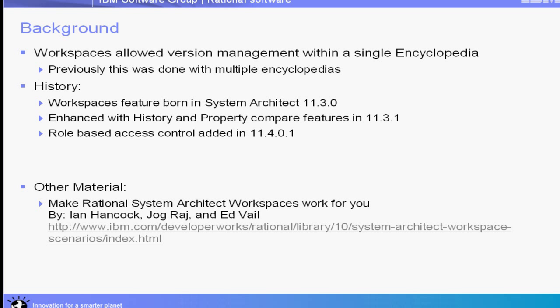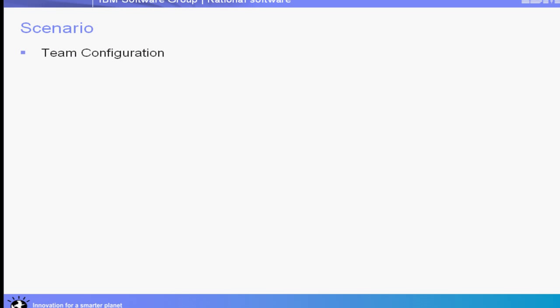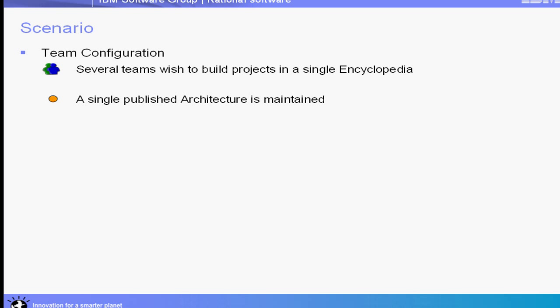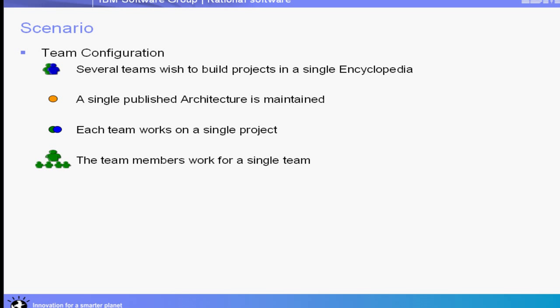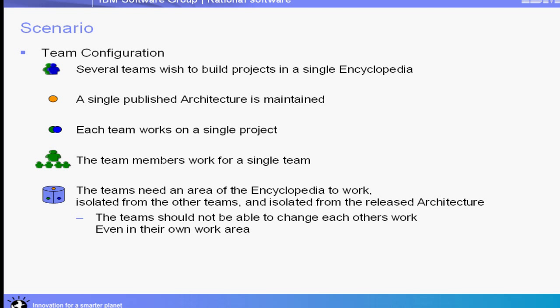For more information about workspaces, take a look at the documentation found in the link below. Let's take a look at the scenario we're going to cover. Firstly, let's have a look at the team configuration. There are several teams which wish to build projects within a single encyclopedia. Their work will be published as a single architecture maintained in a single stream. Each team will work on a single project. Team members will work for a single team and need an area of the encyclopedia to work in which is isolated from the other teams. They will be able to see each other's work but will not be able to modify work even in their own work area.